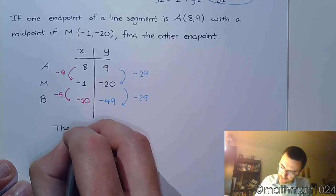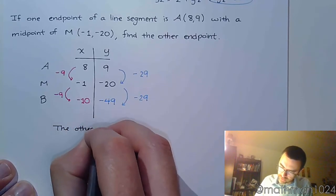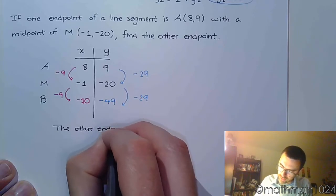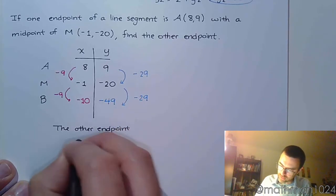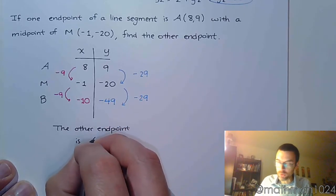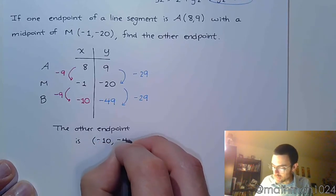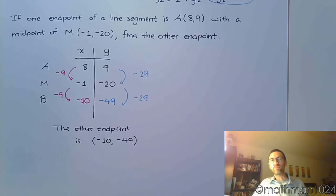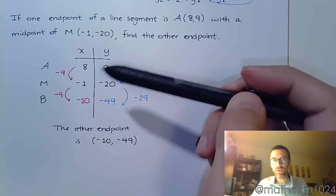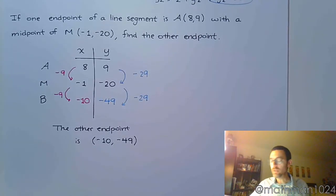And so then we can clearly state at the end that the other endpoint is the ordered pair negative 10, negative 49. And you've got to be careful about this because I've seen students in the past put the midpoint as an endpoint to kind of get these guys swapped around. And of course that ends up with the wrong endpoint at the end. So make sure that you do organize your terms correctly and you're going to be right as rain.